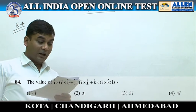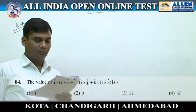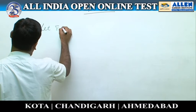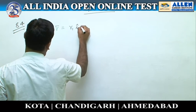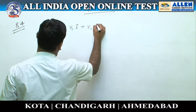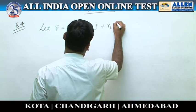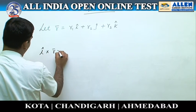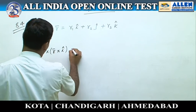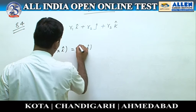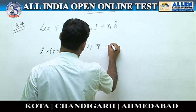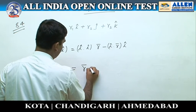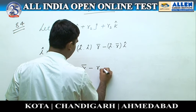Question number 84: The value of i × (r × i) + j × (r × j) + k × (r × k) is. Let r = r1·i + r2·j + r3·k. Now consider i × (r × i): this equals (i·i)r − (i·r)i, which equals r − r1·i.